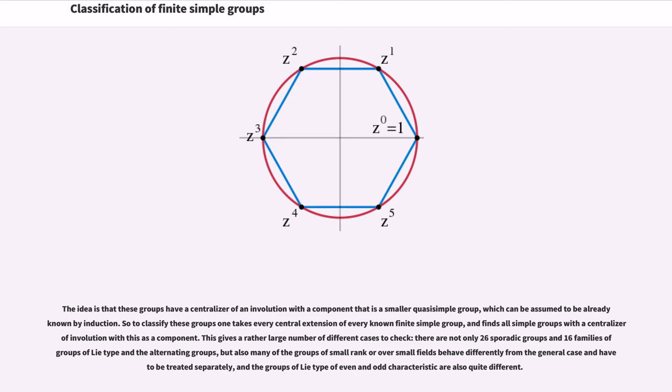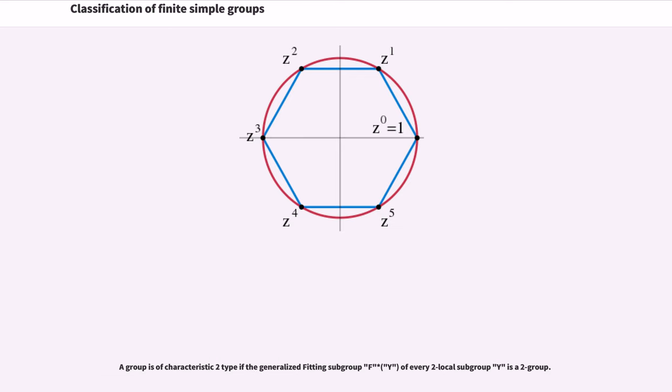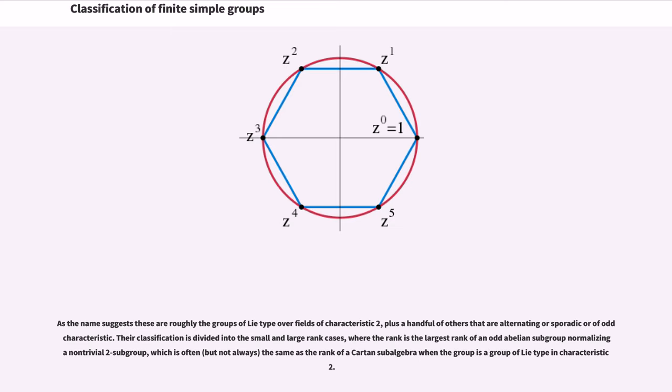The groups of Lie type of even and odd characteristic are also quite different. A group is of characteristic two type if the generalized Fitting subgroup F*(Y) of every two-local subgroup Y is a 2-group. As the name suggests, these are roughly the groups of Lie type over fields of characteristic two, plus a handful of others that are alternating or sporadic or of odd characteristic.